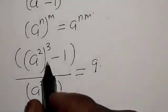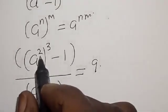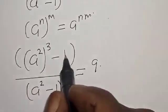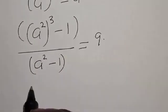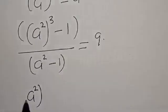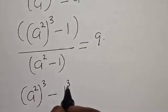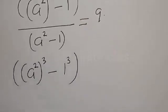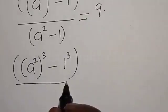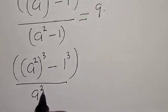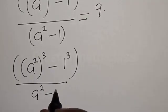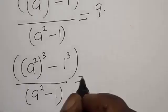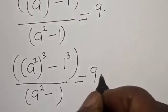Now this is a squared raised to power 3, and this is the same thing as 1 raised to power 3. We have a squared raised to power 3 minus 1 raised to power 3, divided by a squared minus 1, is equal to 9.